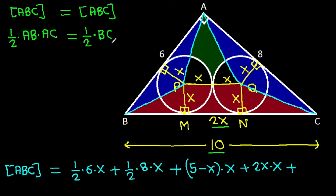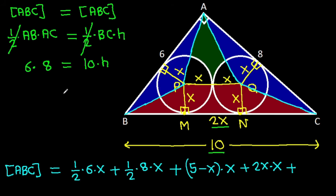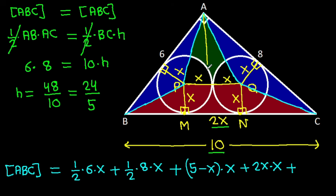Area of ABC is also one-half times base BC times height H. So one-half cancels and AB is 6, AC is 8, BC is 10 times H. So H will be 48 over 10, that will be 24 over 5.